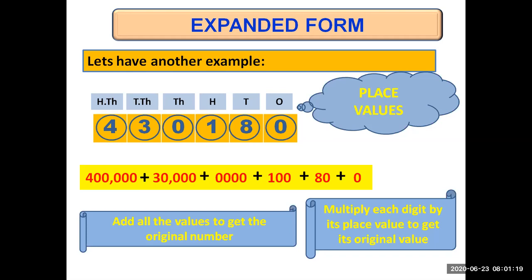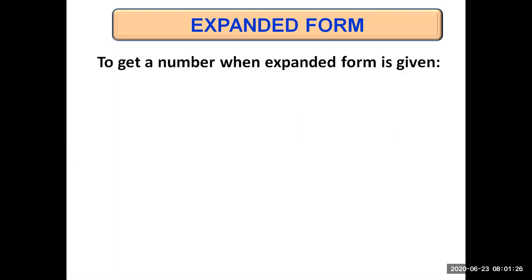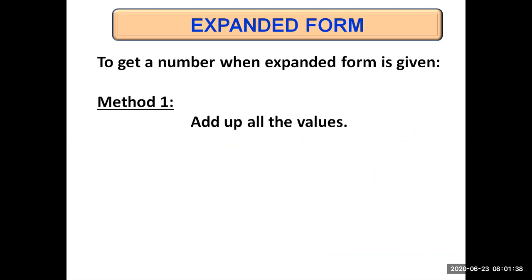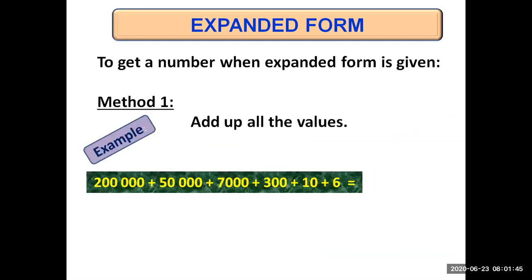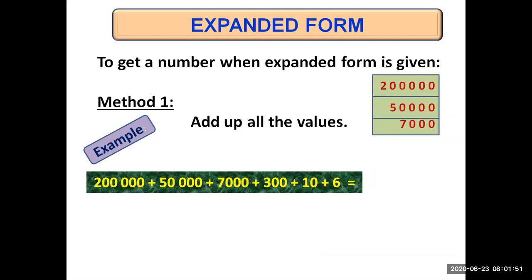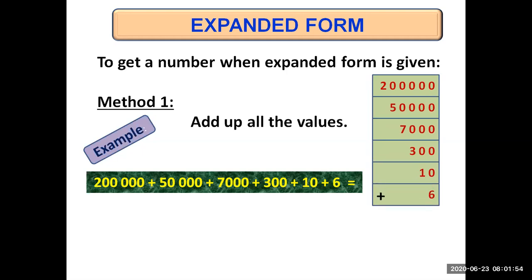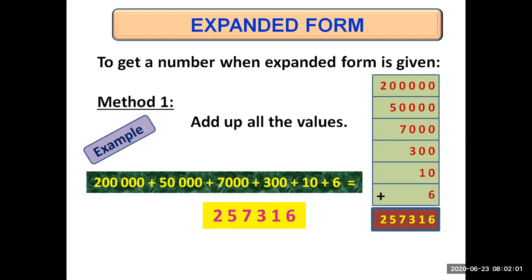And in the same way you can write expanded form of any number. Now, to get a number when we are given the expanded form — till now we were given a number and writing its expanded form, but now we are given expanded form and we will write the number. First method — simple: add up all the values. We are given some values; add them all up and you'll get the original number. For example: two hundred thousand plus fifty thousand plus seven thousand plus three hundred plus ten plus six. Write them vertically, add them all up and you'll get the number 257316 — two hundred and fifty seven thousand three hundred and sixteen.